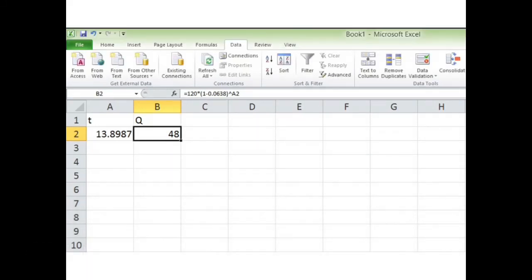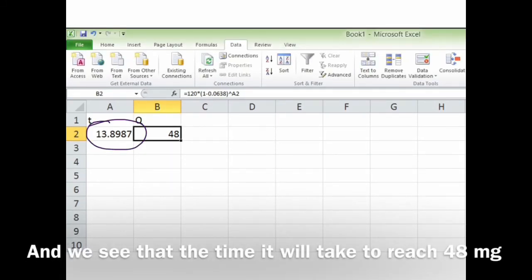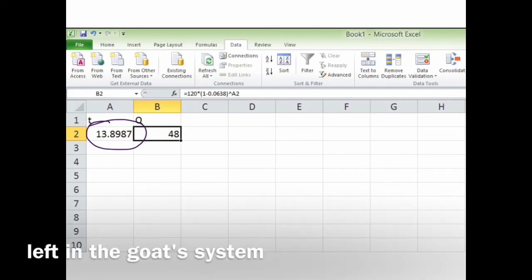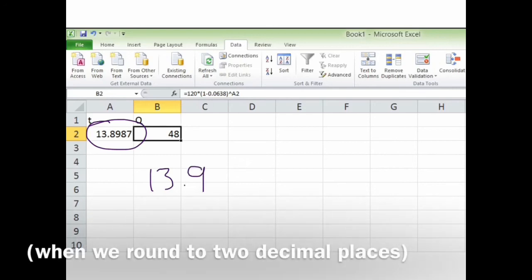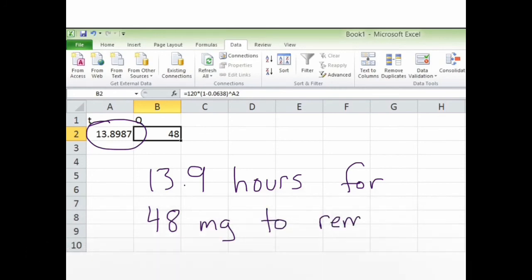Click OK again, and we see that the time it will take to reach 48 mg left in the goat's system is 13.9 when we round to two decimal places. So that's the answer to the second part.